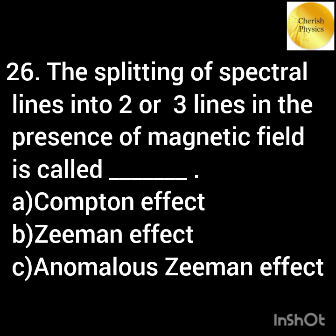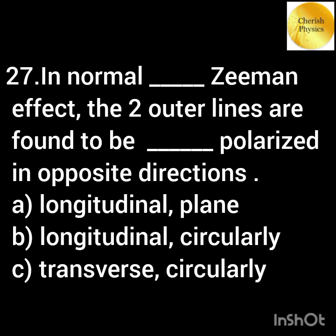The splitting of spectral lines into two or three lines in the presence of a magnetic field is called... In normal Zeeman effect, the two outer lines are found to be dash polarized in opposite directions.